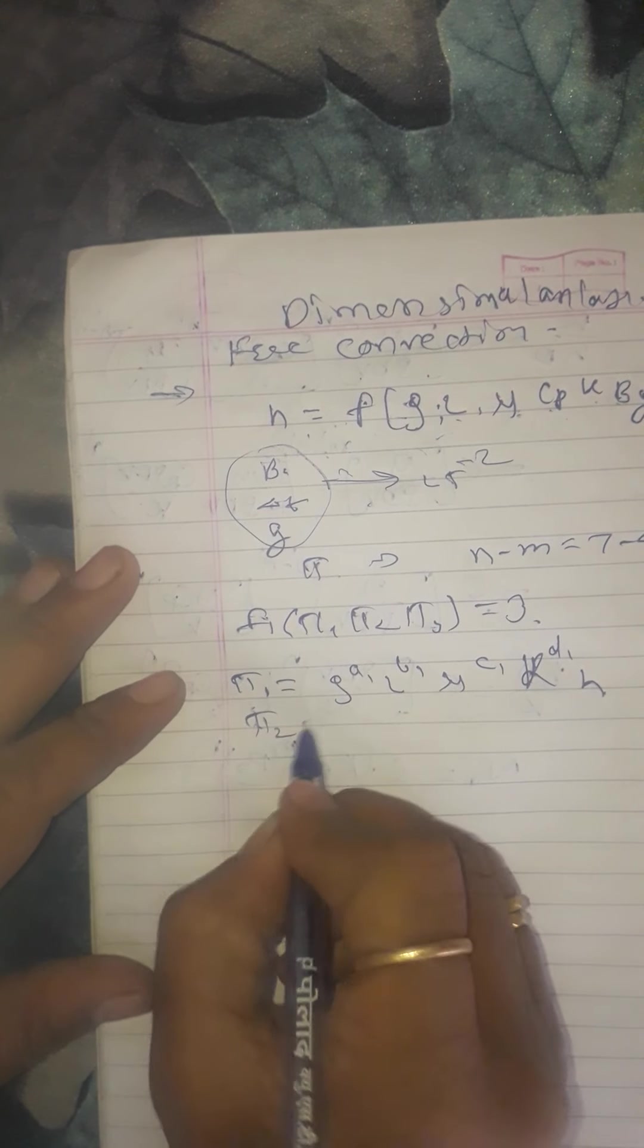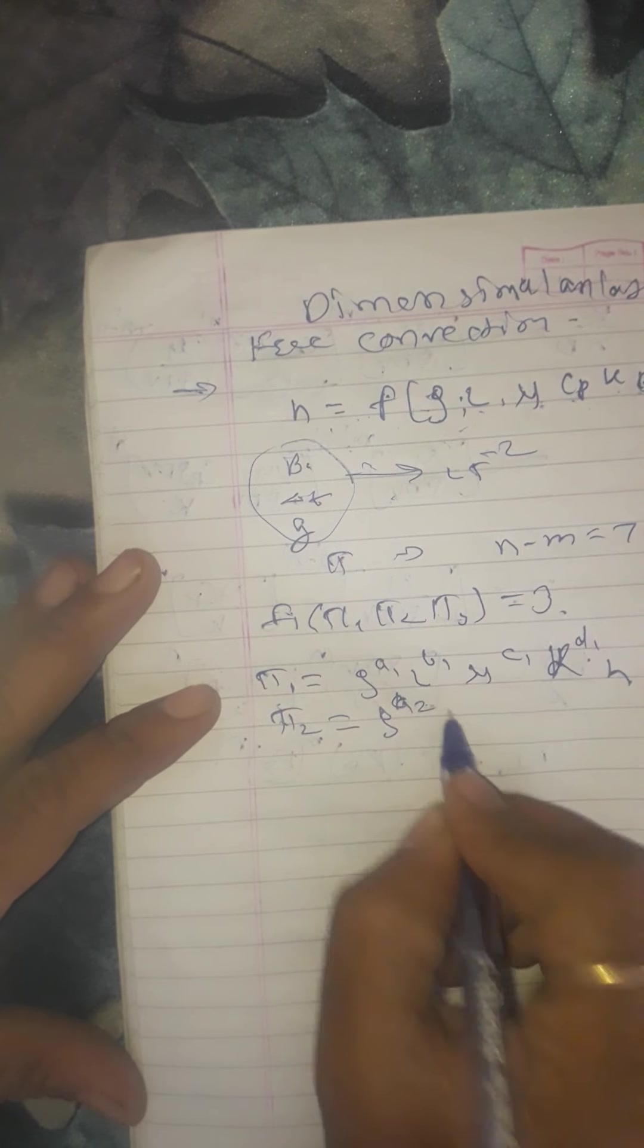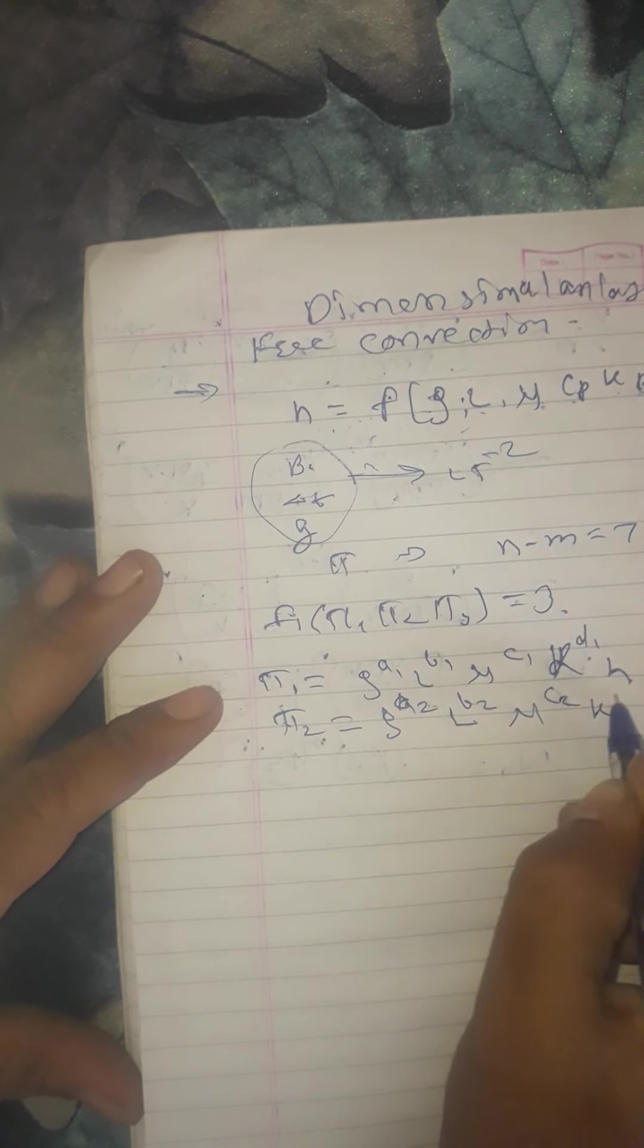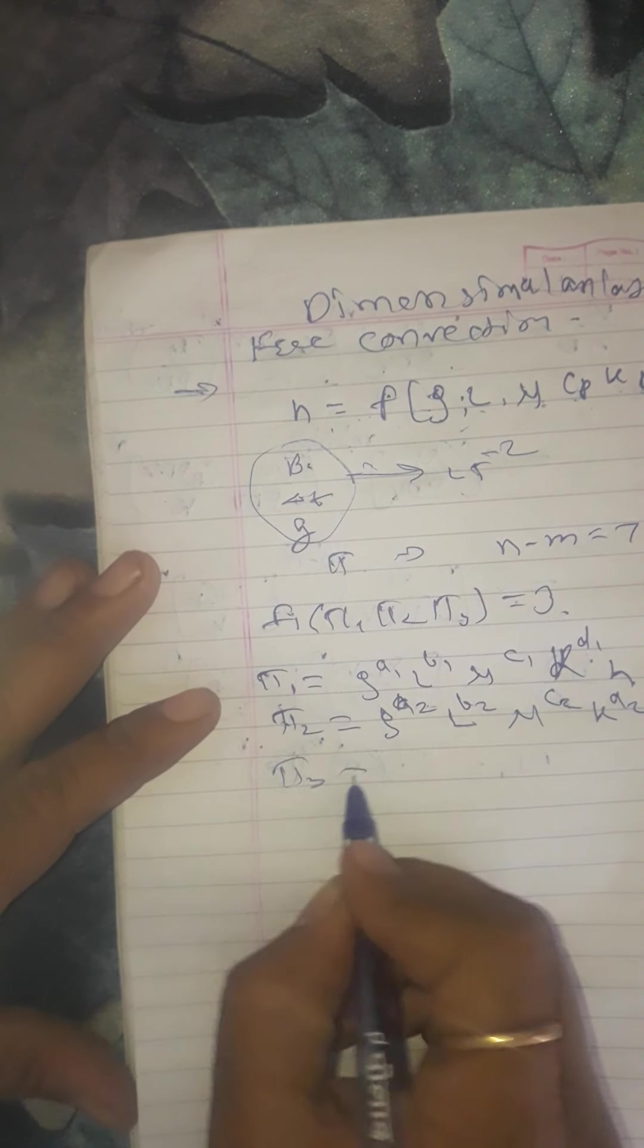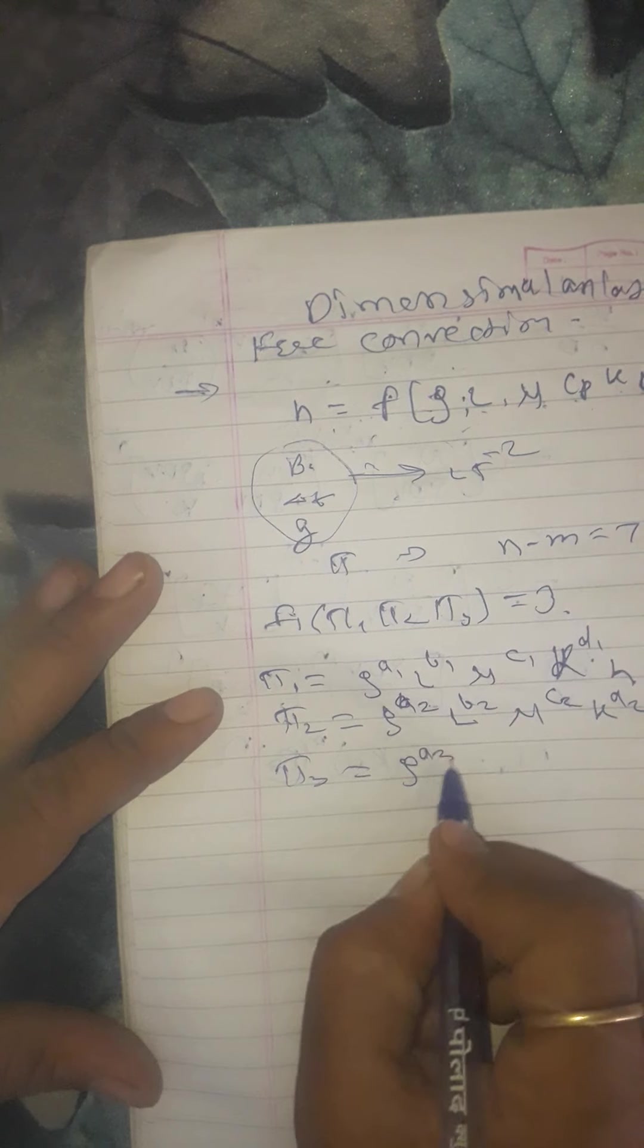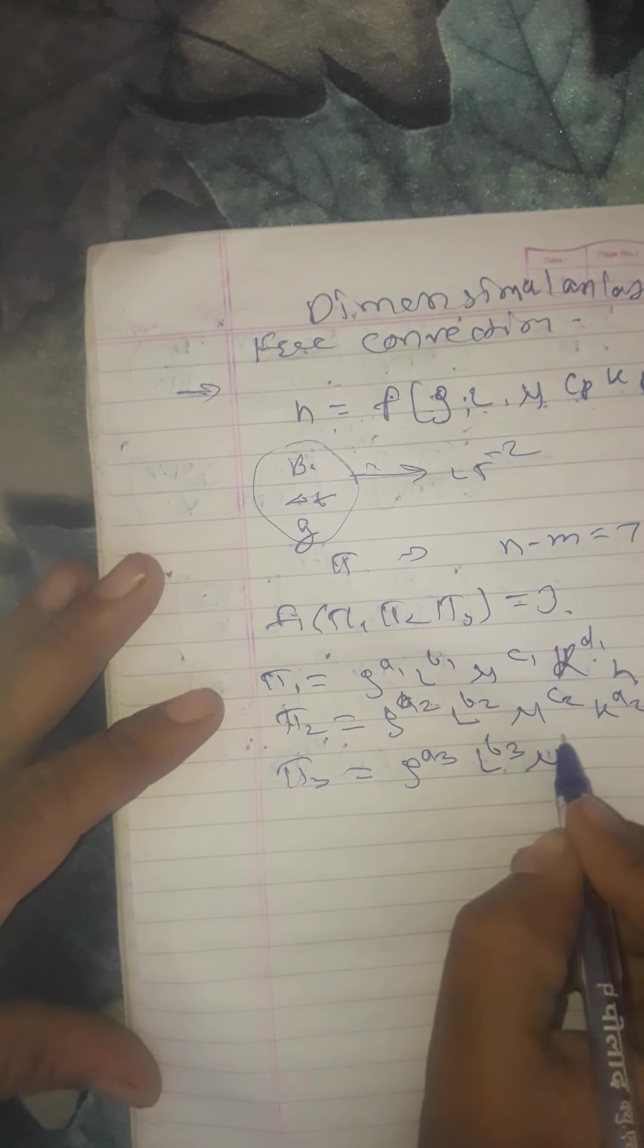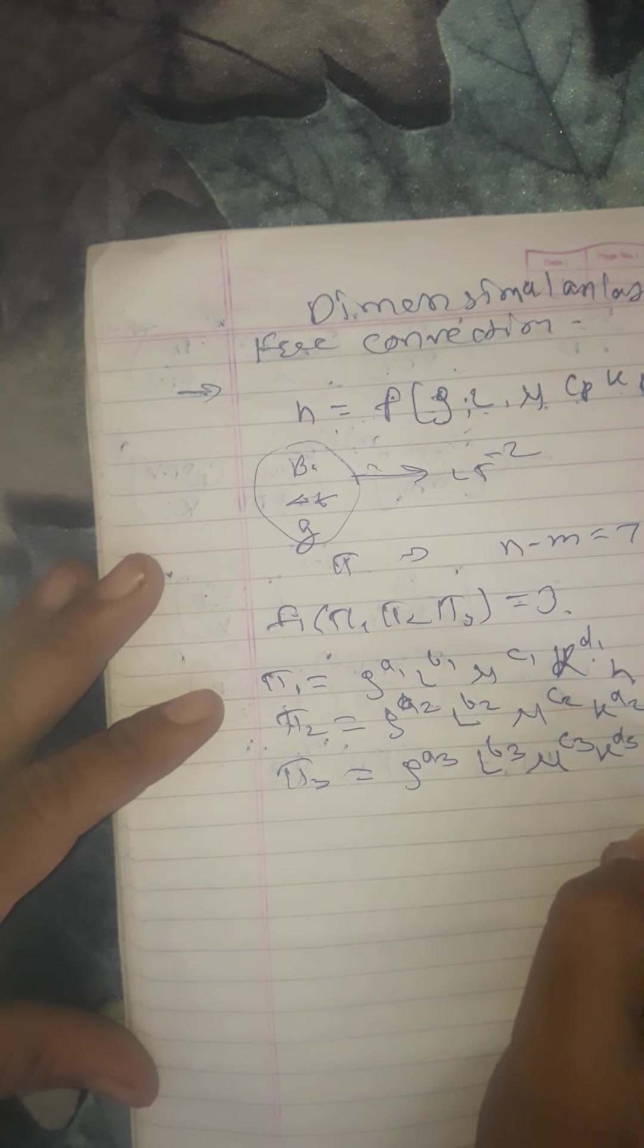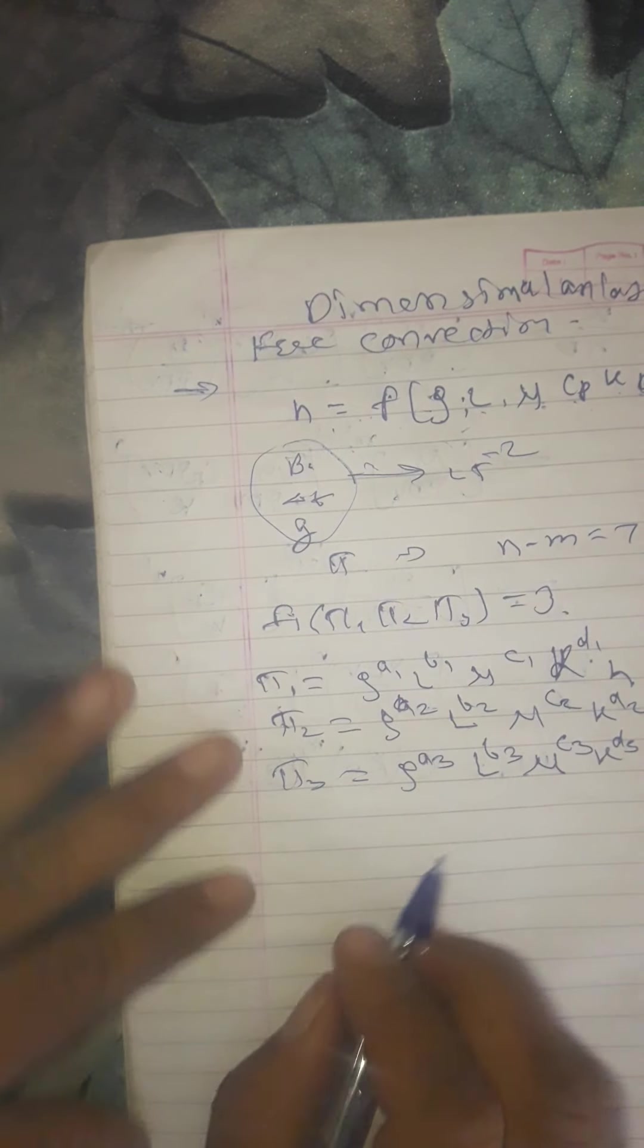Pi 2 is equal to rho a2, L b2, mu c2, k d2, and cp. And pi 3 is equal to rho a3, L b3, mu c3, k d3 into beta g into delta t.